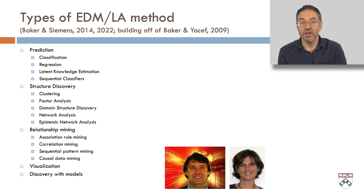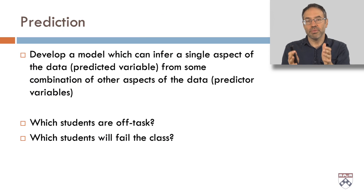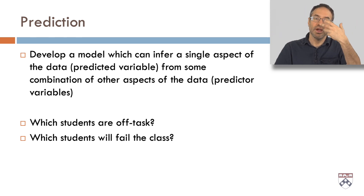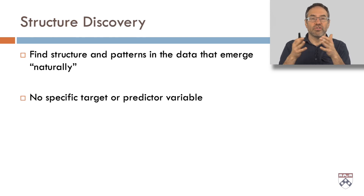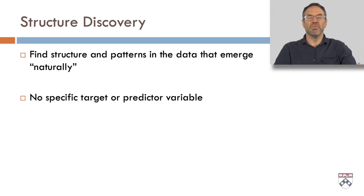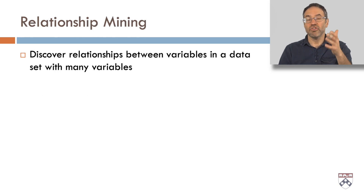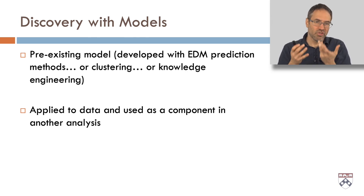A fourth big category is visualization, and a fifth is discovery with models — where we build a model using prediction or structure discovery and then use it as a component in future analyses. In prediction modeling, you develop a model which can infer a single aspect of the data from some combination of other aspects — for example, which students are off task or on track to fail. In structure discovery, you find structure and patterns that emerge naturally with no specific target variable. We're going to go through a bunch of these over the course of the certificate program.